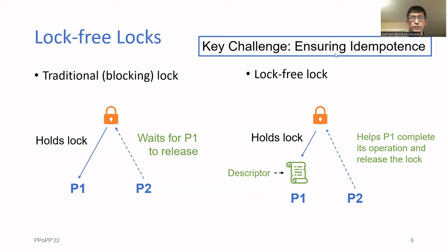And in this setting, the repeated executions can even be concurrent with each other. So we have to make sure to handle this safely as well. Idempotence is the key property for safe helping.